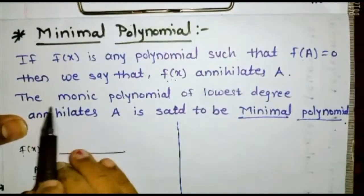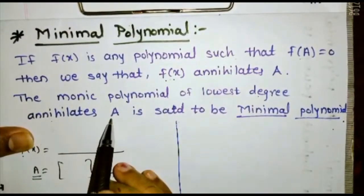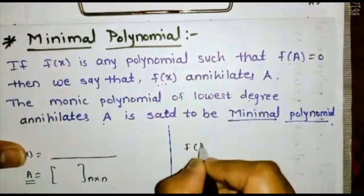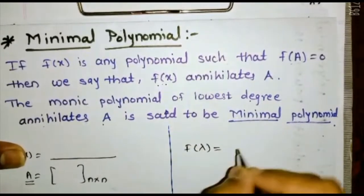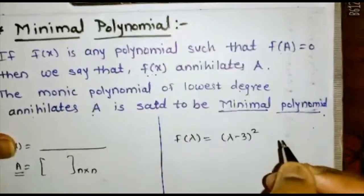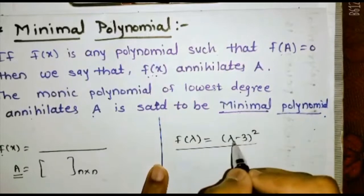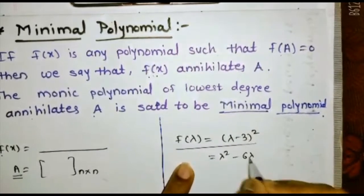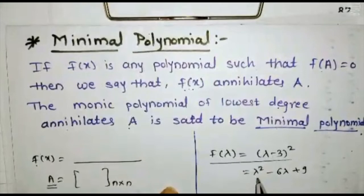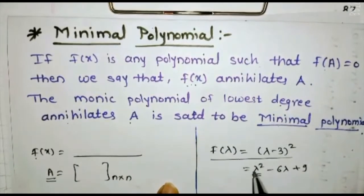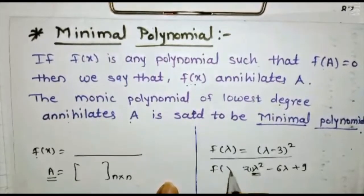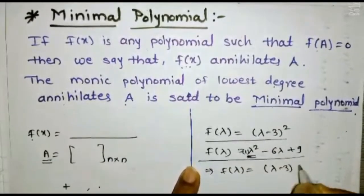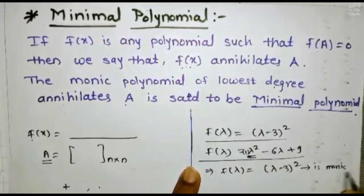The monic polynomial of the lowest degree which annihilates A is called the minimal polynomial. For example, suppose f(λ) = (λ − 3)². After expanding, we get λ² − 6λ + 9. The highest power is λ² with coefficient 1, so f(λ) is a monic polynomial. Therefore f(λ) = (λ − 3)² is a monic polynomial.